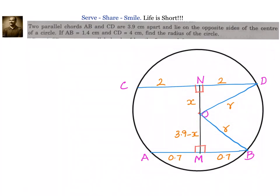Since N is the midpoint of CD, we have CN equals ND equals half of 4, that is 2. Similarly, AM equals MB equals half of 1.4, that is 0.7. Now we have two right angle triangles: one is OND and another is OMB.